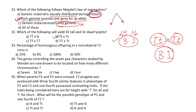Which of the following yields 45 tall and 14 dwarf plants? The answer is capital Tt crossed with capital Tt. The number 14 is almost equal to 15, so the ratio is approximately 3:1.